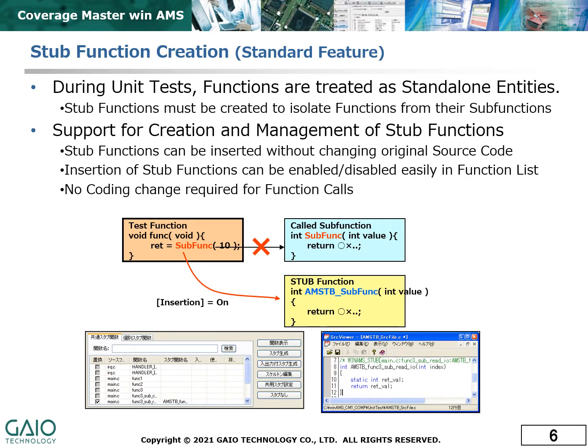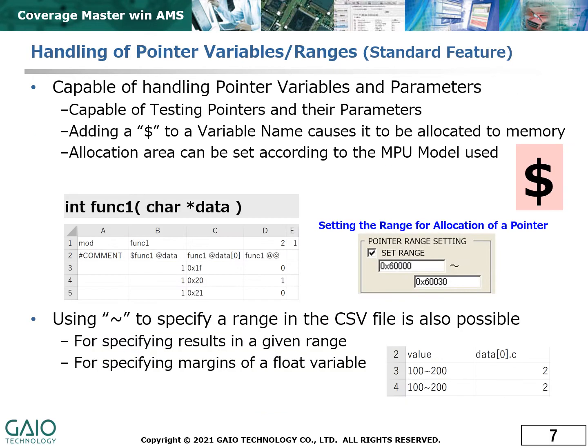Stub functions, which take the place of sub functions so that they do not influence the test results, can be created and inserted easily without impacting the original source code. CoverageMaster WinAMS is also capable of testing the behavior of pointers, which can be allocated to specific areas of memory as required. It also allows a tolerance range to be set for the expected value of floating-point calculations when comparing to the actual result to allow for precision variations.